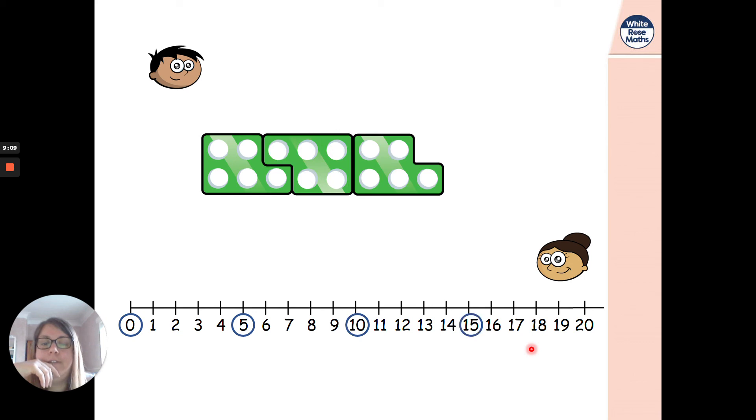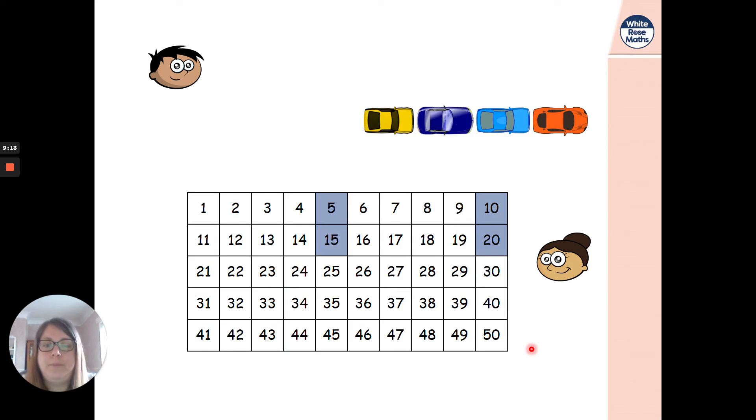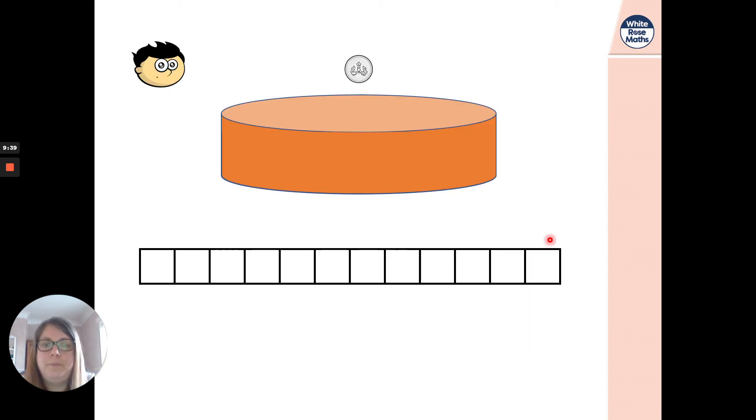5, 10, 15, 20. So we've used our numicon there to help us. So if we're at 20 and one more car comes along, that takes us to 25. If I brought another car along, what would it take us to? It would take us to 30, wouldn't it? Well done. Fantastic. What about the next one then? Where would we go next? To 35. Because you can see our pattern. If we're counting in fives, it ends in a 5 or a 0. Fantastic.